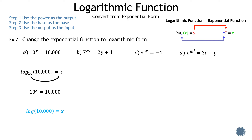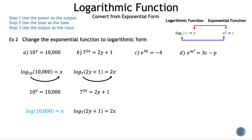Now let's move on to b: 7 raised to the power of 2x is equal to 2y plus 1. The base remains the same — in this case, 7. And our power, 2x, is the new output. Now we can place in the last variable we haven't used, 2y plus 1. Let's verify by drawing the arrow from the base to the output and setting that equal to the input. We have our given, so the log form is correct.